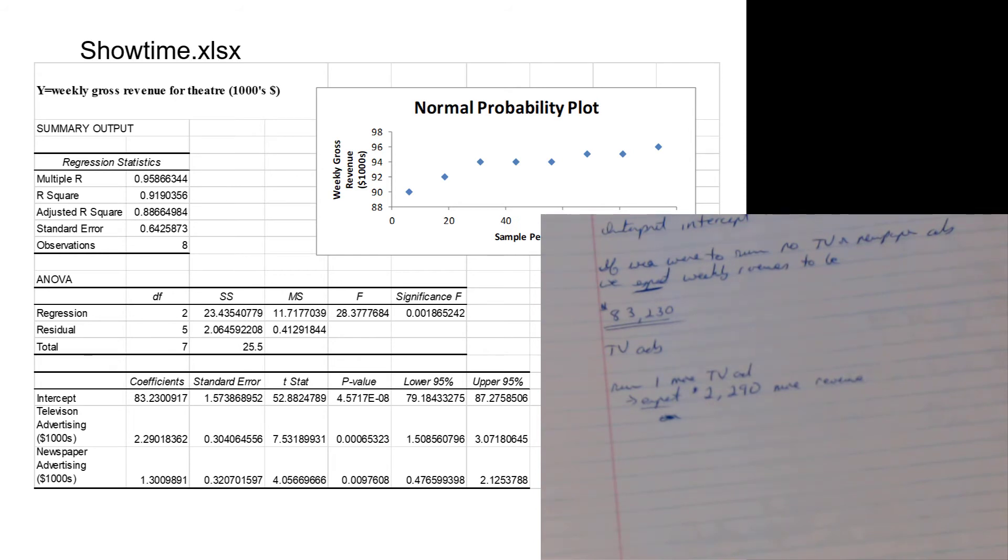Same thing if we were to run one newspaper ad - we would expect about thirteen hundred bucks more in weekly revenue. Then we can compare each with how much would a TV ad cost, how much would a newspaper ad cost, and then make the appropriate decisions.